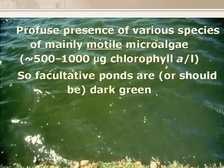Facultative ponds should be dark green in colour, as there is a profuse growth in them of mainly motile microalgae. In a well-performing facultative pond, the algal concentration, expressed in terms of the main algal photosynthetic pigment, is around 500–2000 micrograms of chlorophyll A per litre.